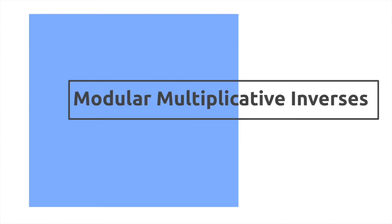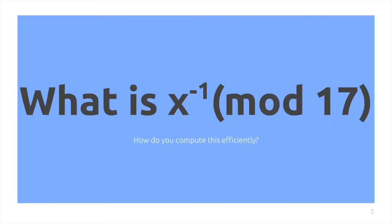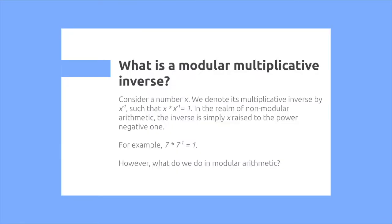Modular multiplicative inverses. What is the x inverse of mod 17? How do you compute this efficiently? First of all, what is a modular multiplicative inverse?